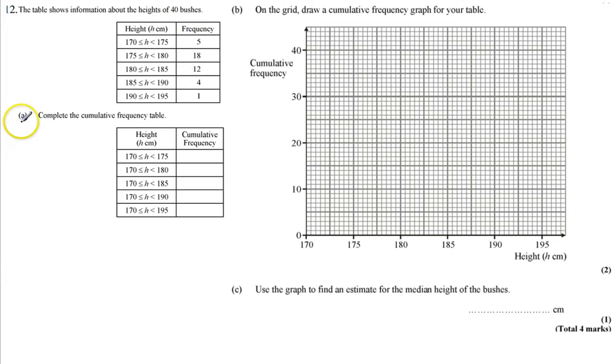There's 40 bushes altogether. For part A, we're being asked to complete the cumulative frequency table to show this information. And then for part B, we want to complete a cumulative frequency graph from our cumulative frequency table.